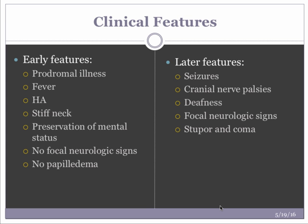Early features of meningitis include a prodromal illness, fever, and headache. Patients may also have stiff neck. Typically they have preservation of mental status, do not have neurologic symptoms, and do not have papilledema. A variety of viruses, bacteria, fungi, parasites, and neoplasms can cause inflammation of the meninges. Later features include seizures and cranial nerve palsies.